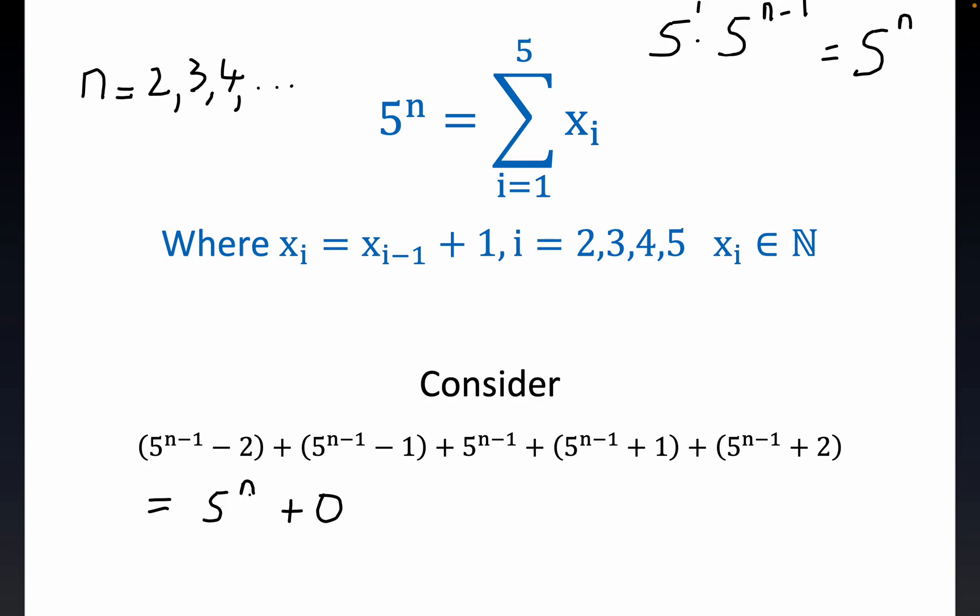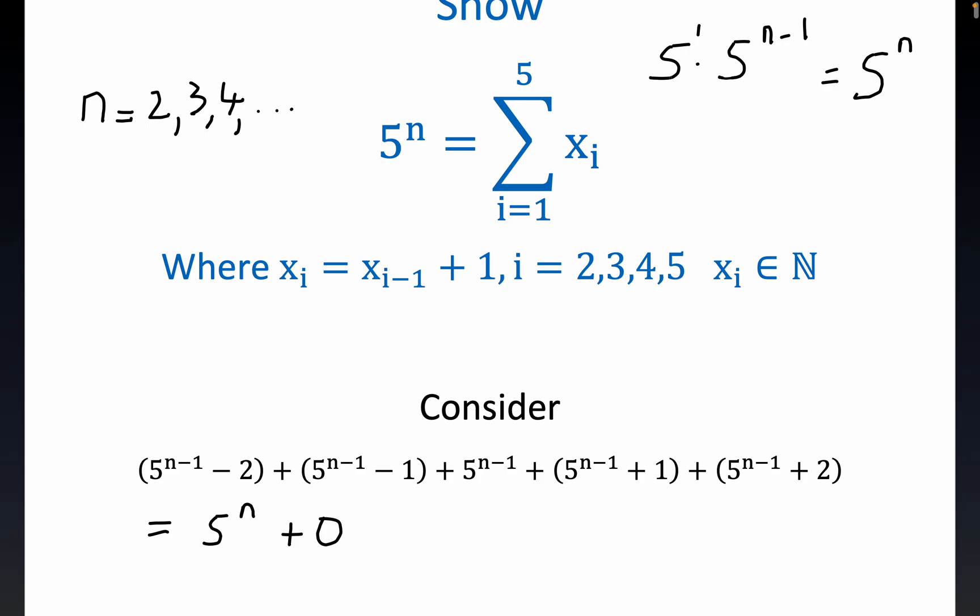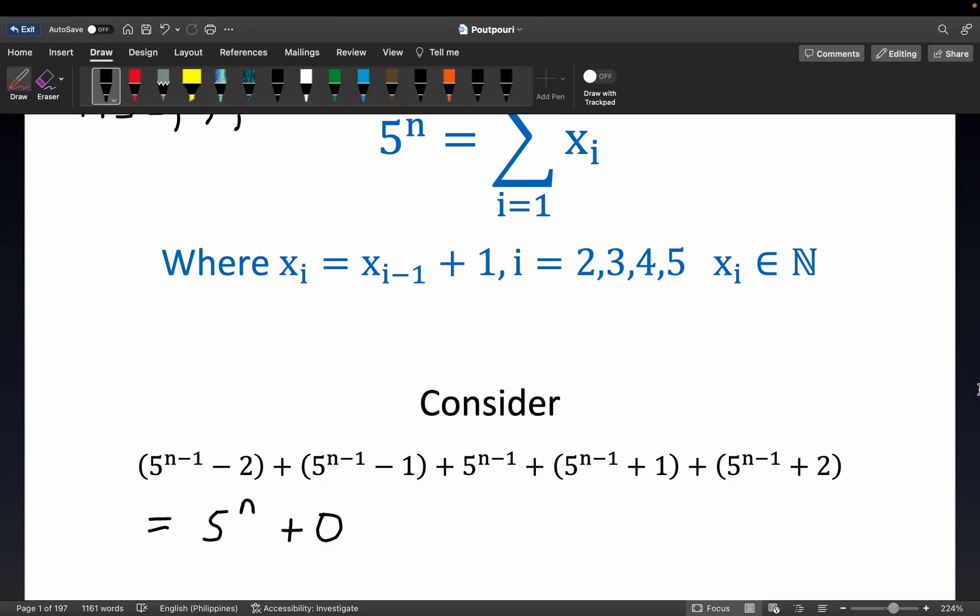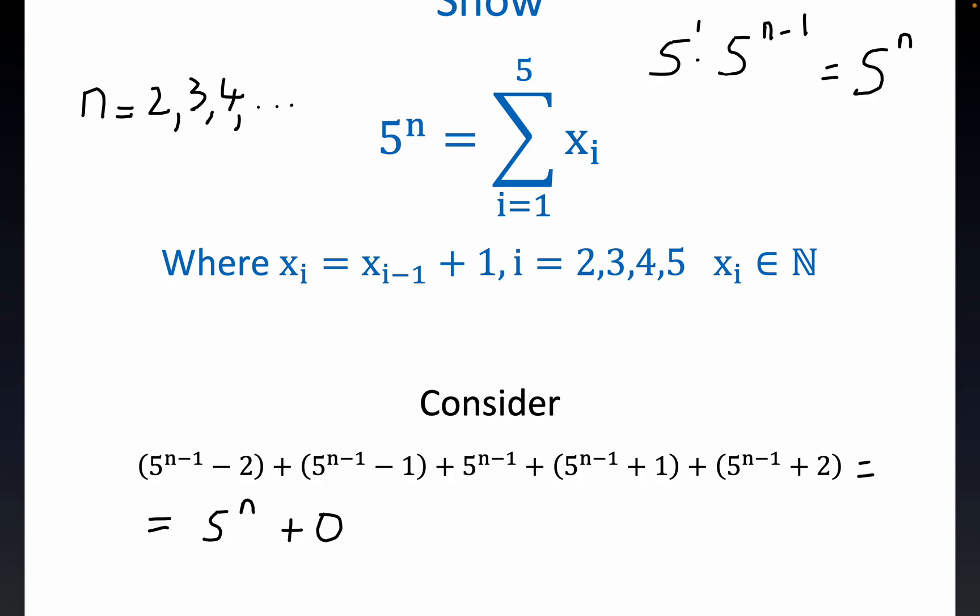And again, the 5 to the n is because of this truth right up here that 5 copies of 5 to the n minus 1 is 5 to the n. So that's definitely equal to 5 to the n. And so we've proved it. That proves the result. We've constructed five numbers such that when you sum them, you're equal to 5 to the n. So you can go ahead and say equals to 5 to the n right here. And that's QED time, right?